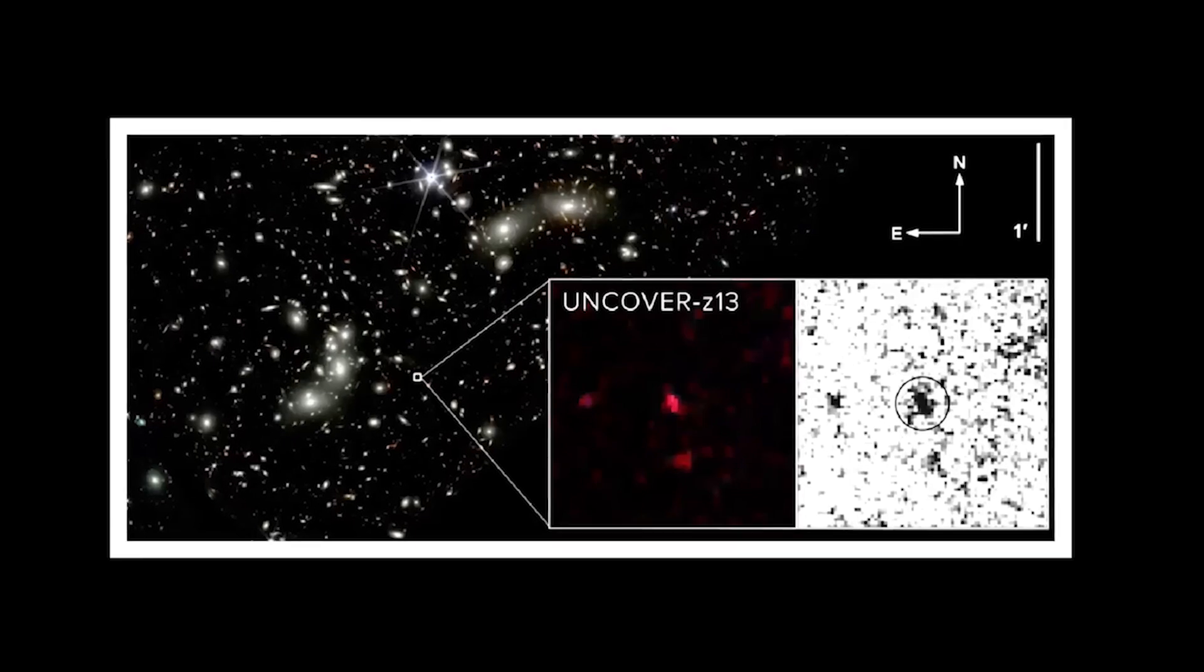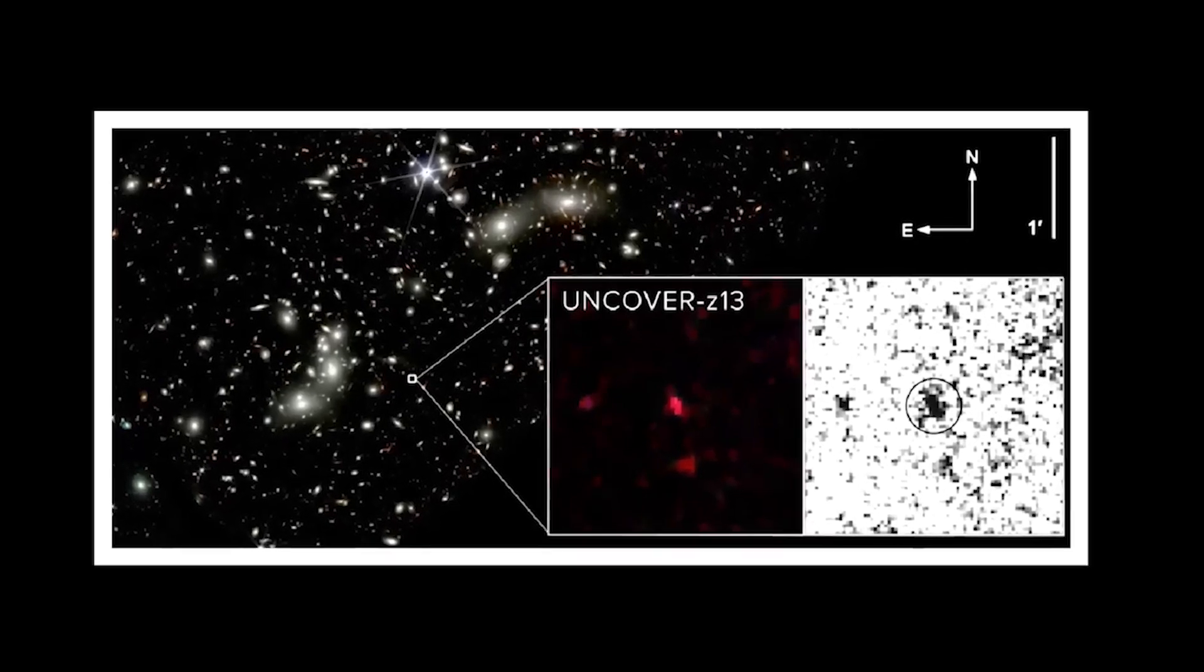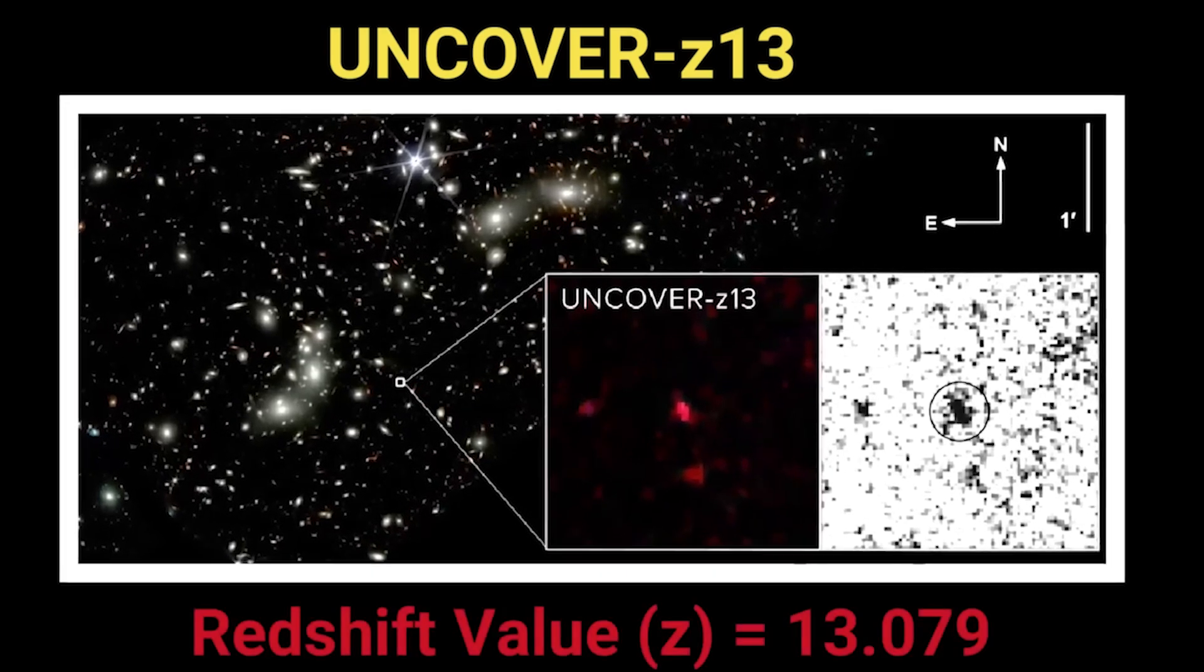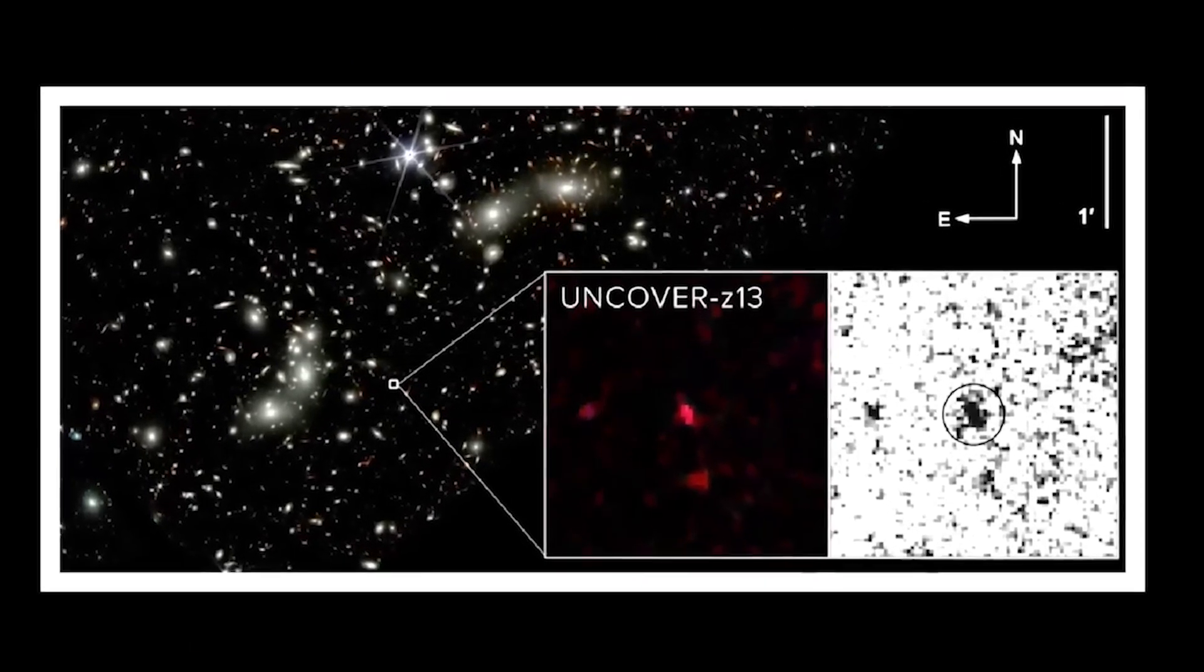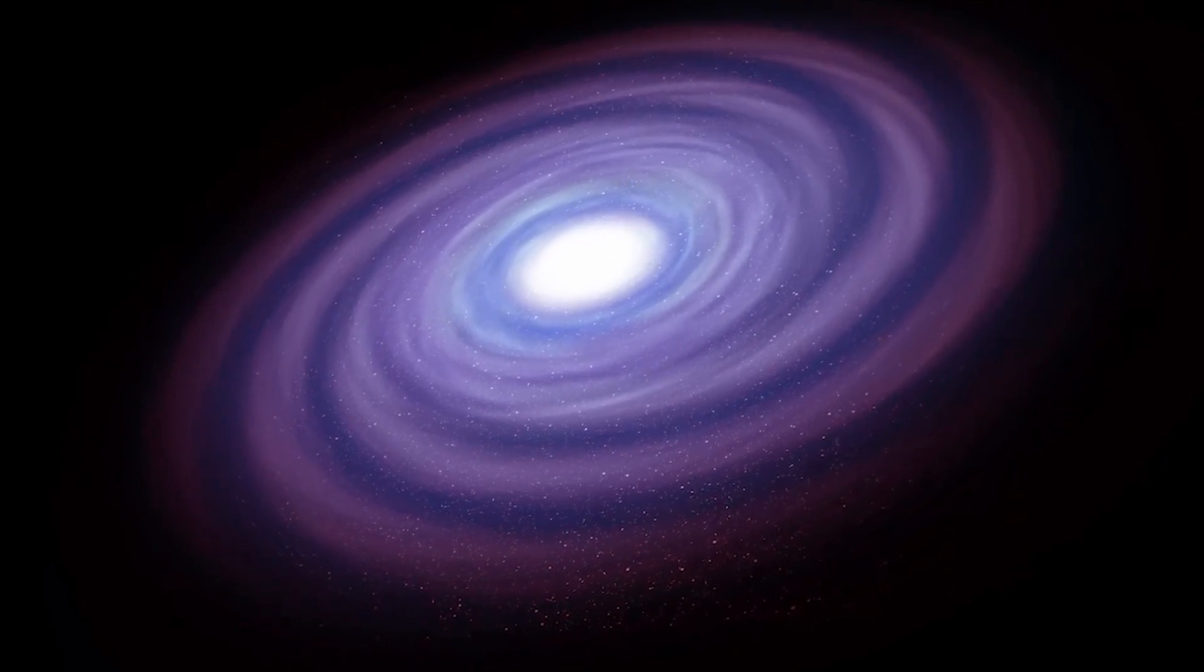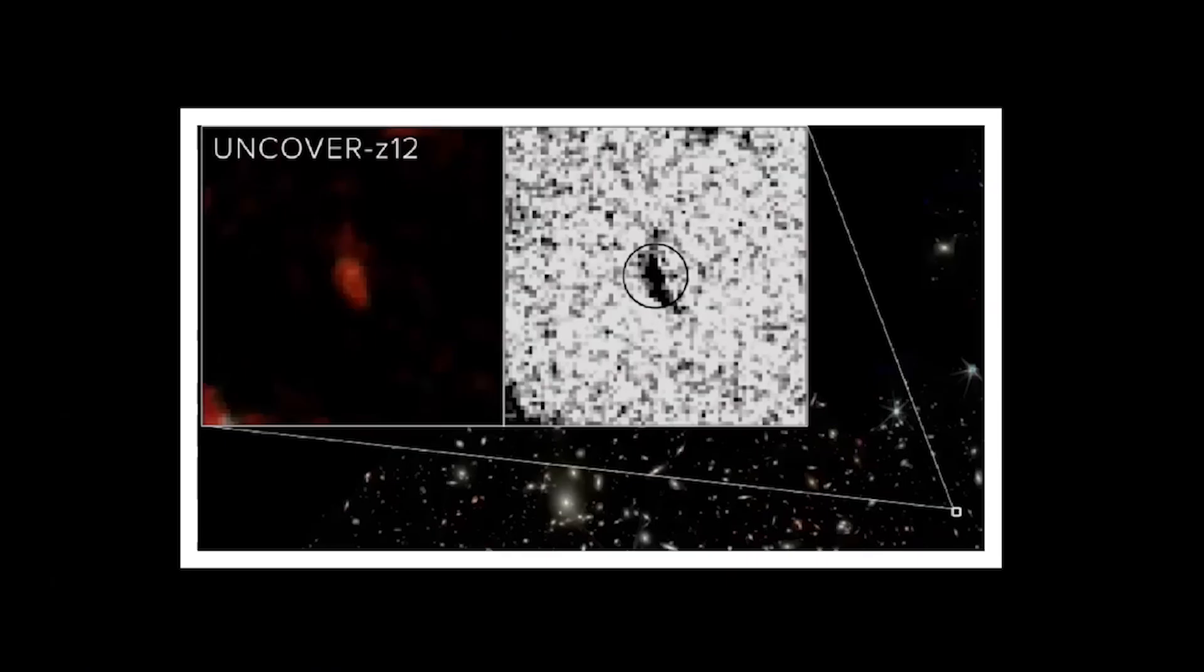Two of the most distant galaxies ever observed have been pinpointed by the eagle-eyed James Webb Telescope. The first, designated Uncover Z 13, boasts a redshift of 13.079, allowing us to observe it as it existed just 330 million years after the Big Bang.